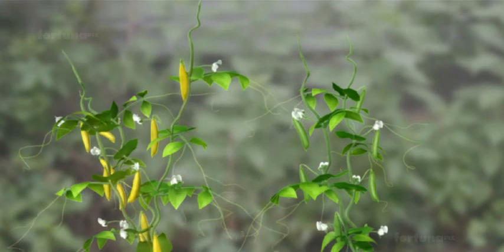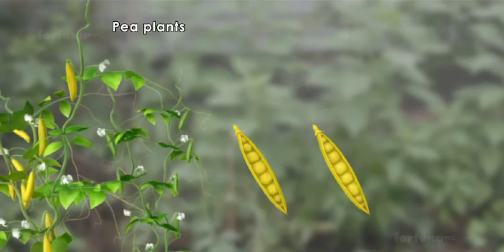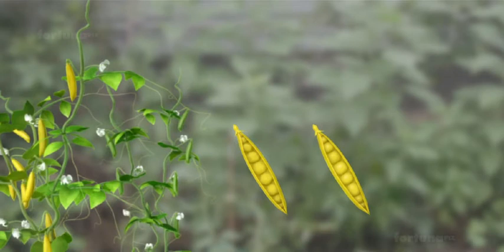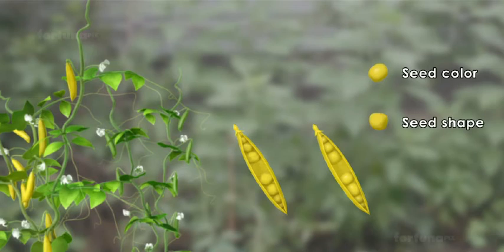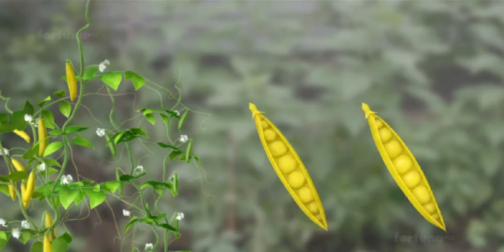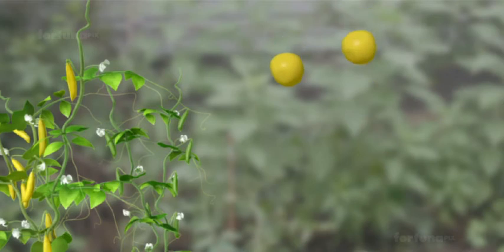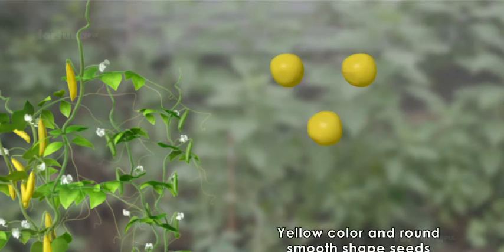He began his experimentation using pea plants that bred true for two characteristics: seed color and seed shape. He selectively crossed pea plants until the seeds had a yellow color and a round, smooth shape for a few generations, yielding purebred plants.